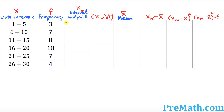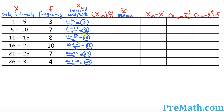So I'm going to do 1 plus 5 divided by 2, which is 6 over 2, giving you 3. The interval midpoint for this data is 3. Likewise, 6 plus 10 divided by 2 is 16 divided by 2, which is 8. The remaining values in this column turn out to be 13, 18, 23, and 28, by adding the two boundary numbers and dividing by 2.